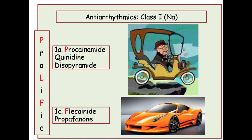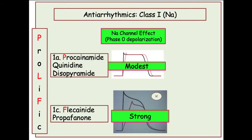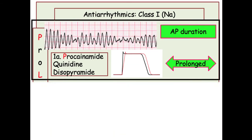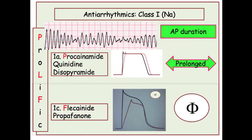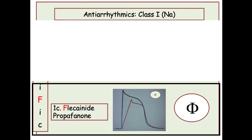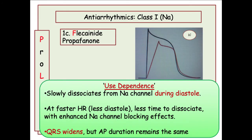The archaic 1A agents include quinidine and disopyramide, and the newer 1C agents include flecainide and propafenone. Comparing 1A and 1C: they both have modest to strong effect on phase zero, but what matters is how this impacts the action potential. The 1A agents prolong the action potential and predispose to arrhythmia — torsade in particular. 1C agents, which have a strong effect on phase zero, do not prolong the action potential. Use dependence relates to dissociation from the sodium channel: at faster heart rates, there is less time for dissociation, resulting in widening of the QRS — the nuance the USMLE is apt to test.